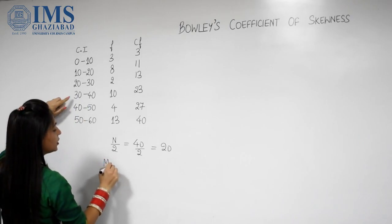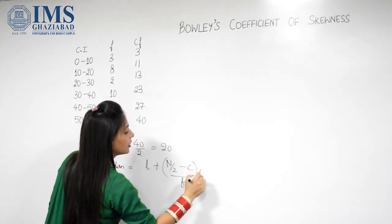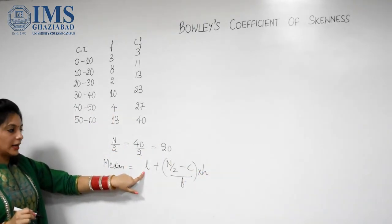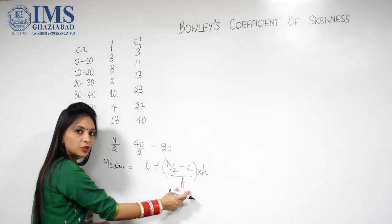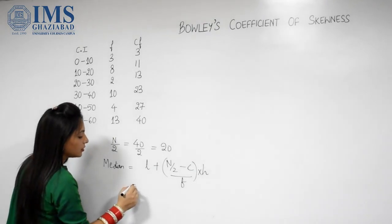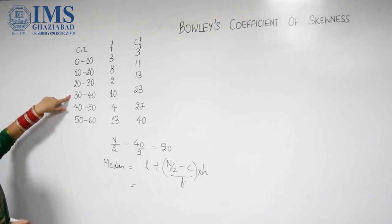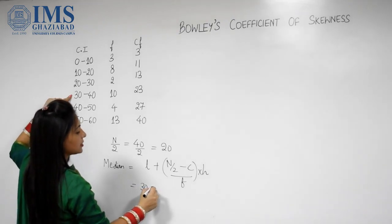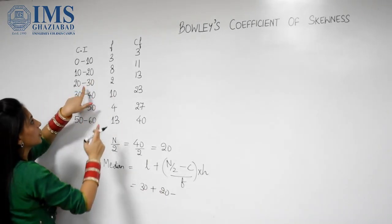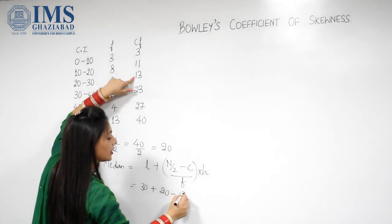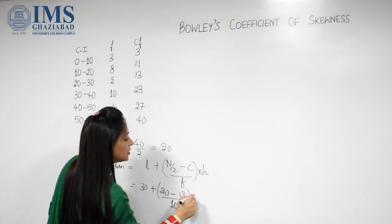We will apply the formula of median: L plus N upon 2 minus C, divided by F, into H. Where L is the lower limit of the median class, C is the cumulative frequency of the class preceding the median class, F is the frequency of the median class, and H is the height of the interval. Our median class is 30 to 40, so lower limit L is 30, N by 2 is 20, C is 13, F is 10, and H is 10.